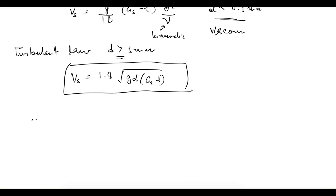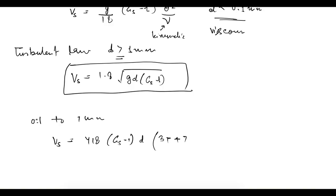If it is a transient flow — meaning particle size is between 0.1 mm and 1 mm, between laminar and turbulent — then the velocity of settlement is given as: Vs = (418 × (GS − 1) × d³ × T + 70) / 100, where T is temperature in degrees Celsius.